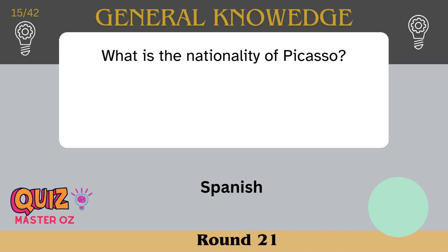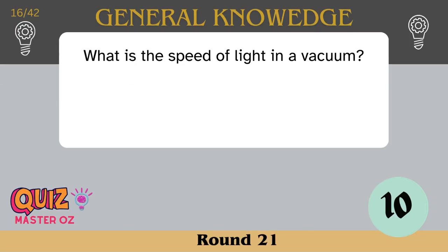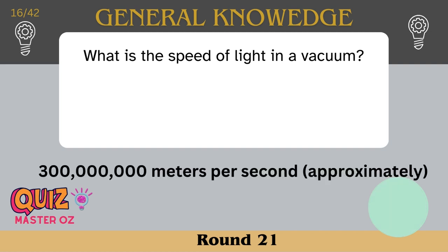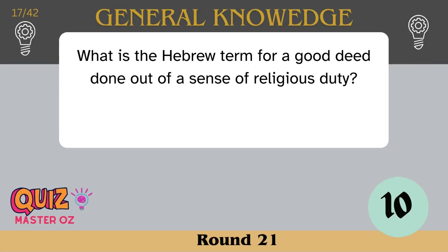Which bone are babies born without? Kneecaps. What is the nationality of Picasso? Spanish. What is the speed of light in a vacuum? 300 million meters per second approximately. What is the Hebrew term for a good deed done out of a sense of religious duty?